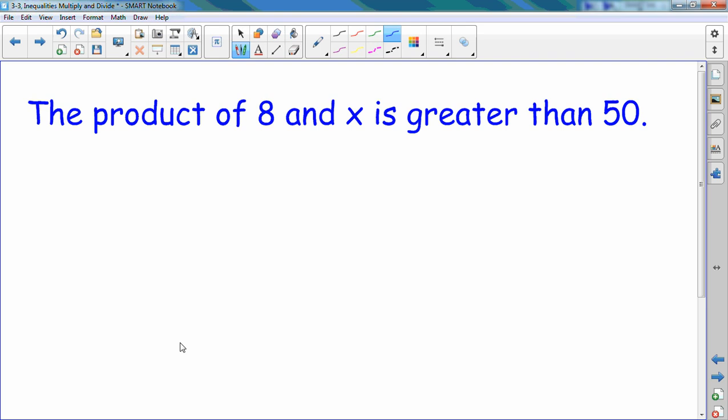If it's in words, the first thing you have to do is translate the words to an inequality. So, I look at the product of 8 and x is greater than 50. What does product mean? Multiply. What am I multiplying? 8 and x. So, I have 8x is greater than 50. How do I solve it? Divide by 8.